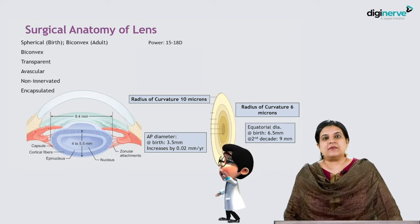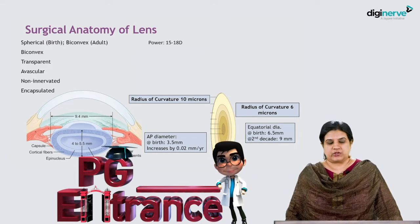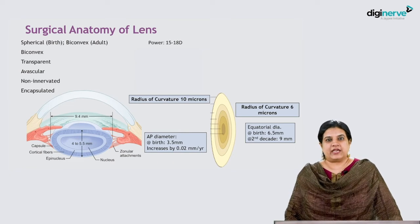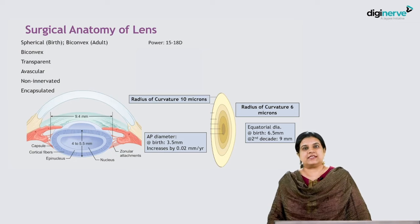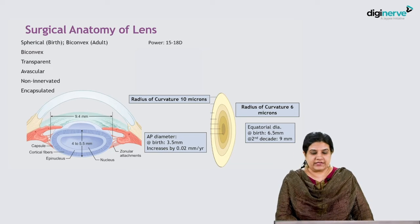Many MCQs can come regarding the numerical values associated with the dimensions of the lens. The power of the lens is about 15 to 18 diopters. The radius of curvature of the anterior lens surface is 10 microns.